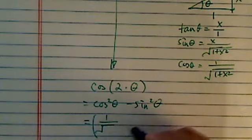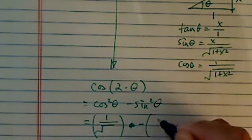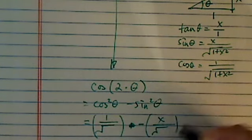It's 1 over radical of 1 plus x squared, that's actually minus x over radical of 1 plus x squared, all squared. Now let's write it out.